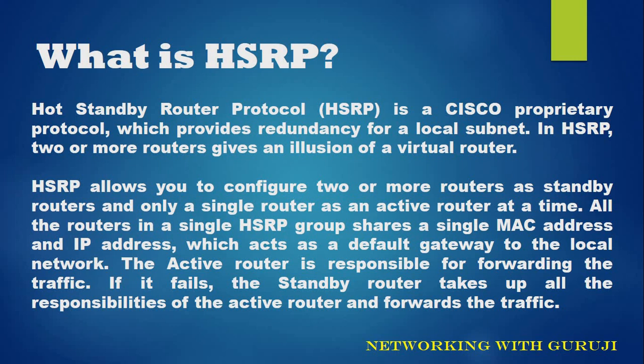All the routers in a single HSRP group share a single MAC address and IP address, which acts as a default gateway to the local network. The active router is responsible for forwarding the traffic. If it fails, the standby router takes up all the responsibilities of the active router and forwards the traffic.